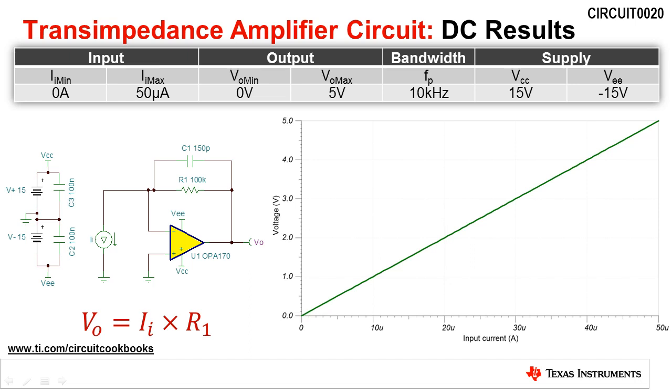A DC sweep of the input current from 0 to 50 microamps yields an output voltage from 0 to 5 volts. This verifies the functionality of the circuit.